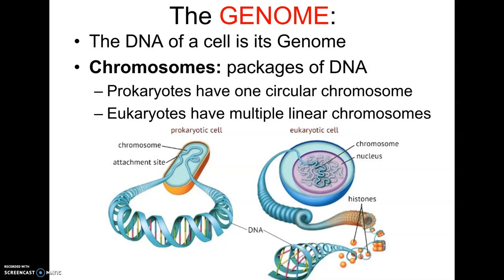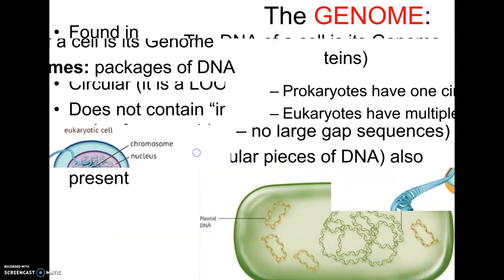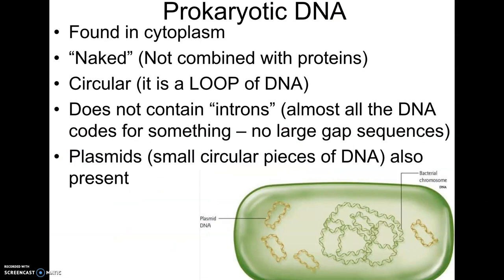Prokaryotes, bacteria, have just one chromosome — it's one giant loop of DNA, as shown in the diagram here. Eukaryotes have multiple chromosomes, and our chromosomes are not circular like a bacterial chromosome, but they're linear. We're going to talk about that in more detail in just a second. So let's go through prokaryotic DNA first.